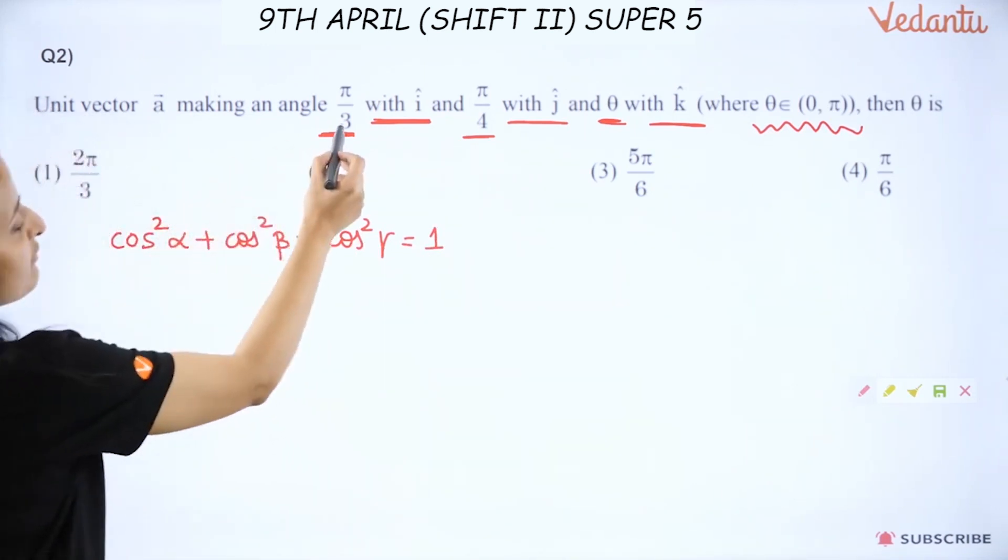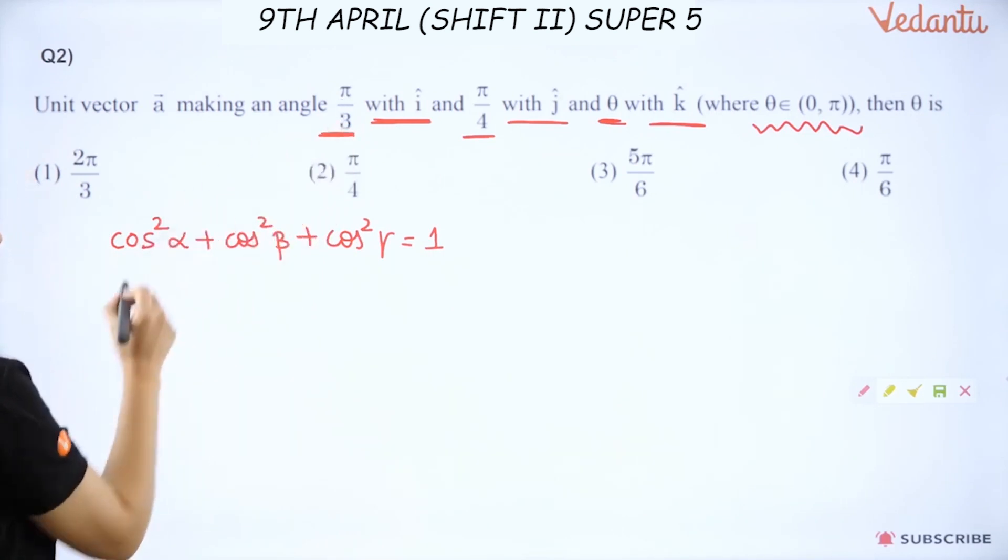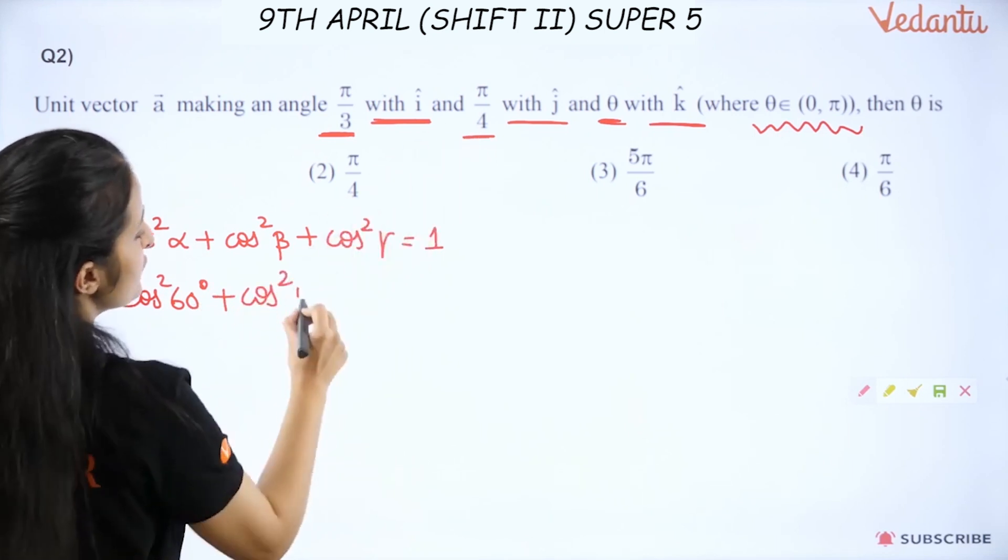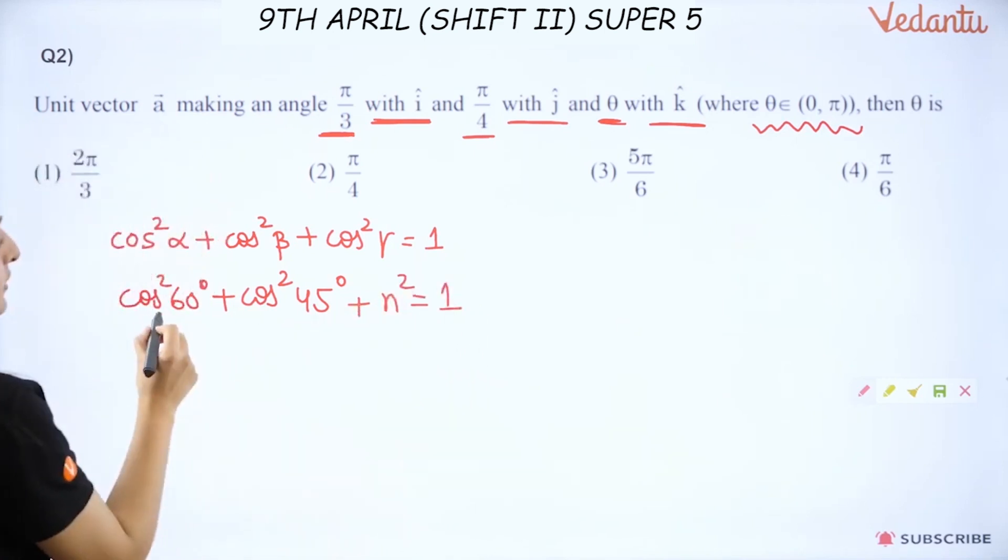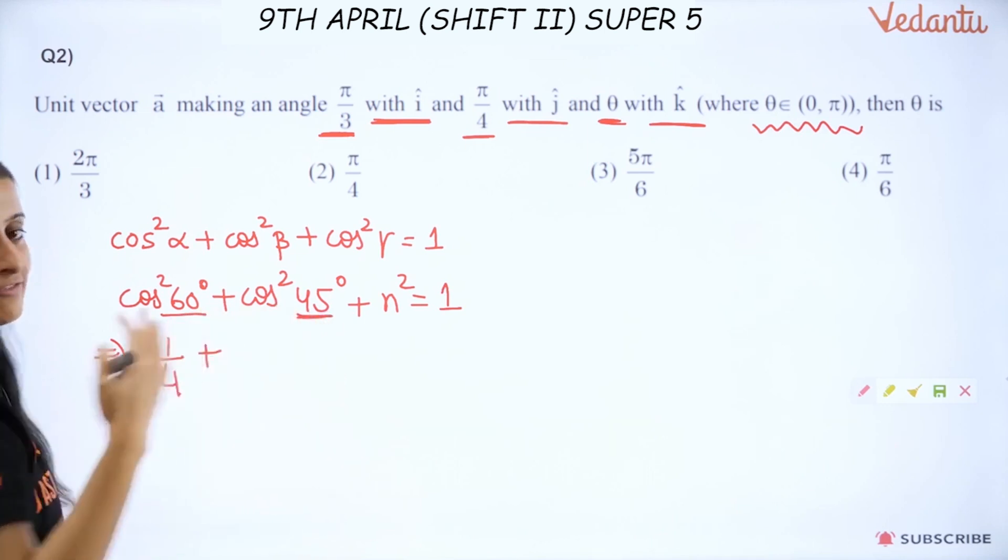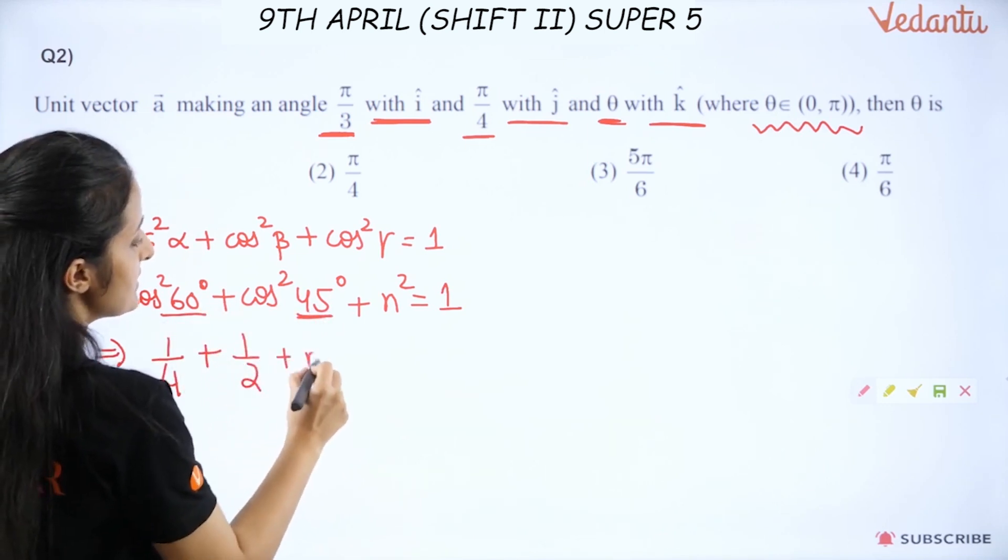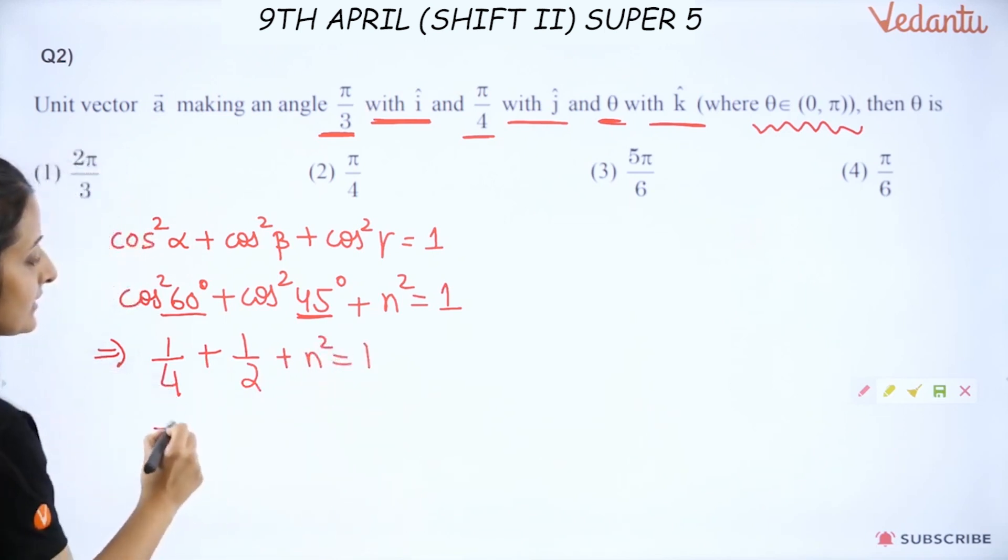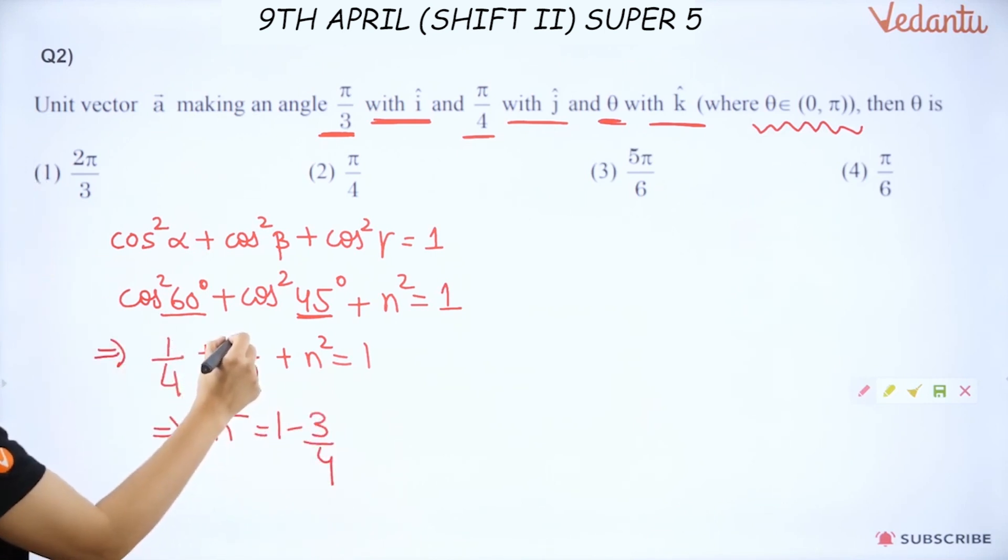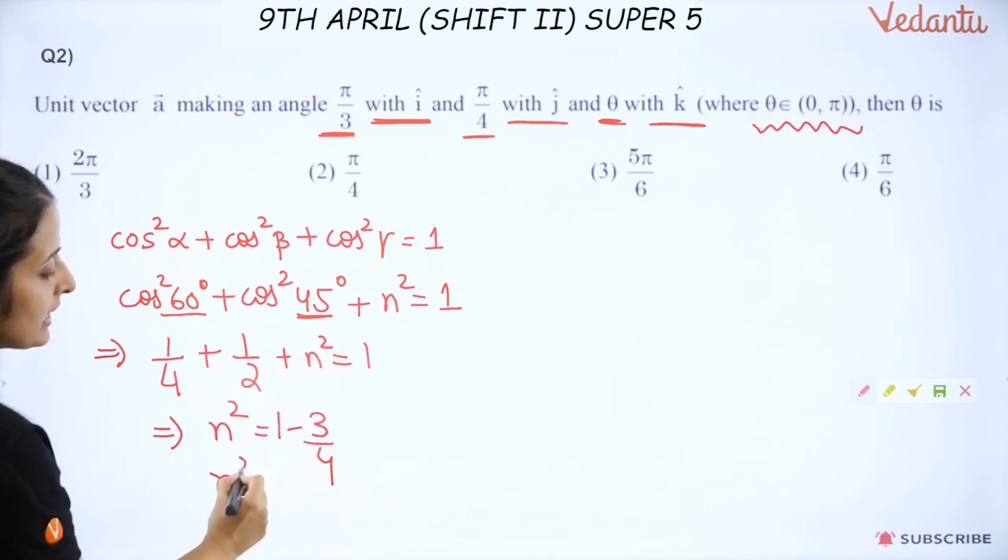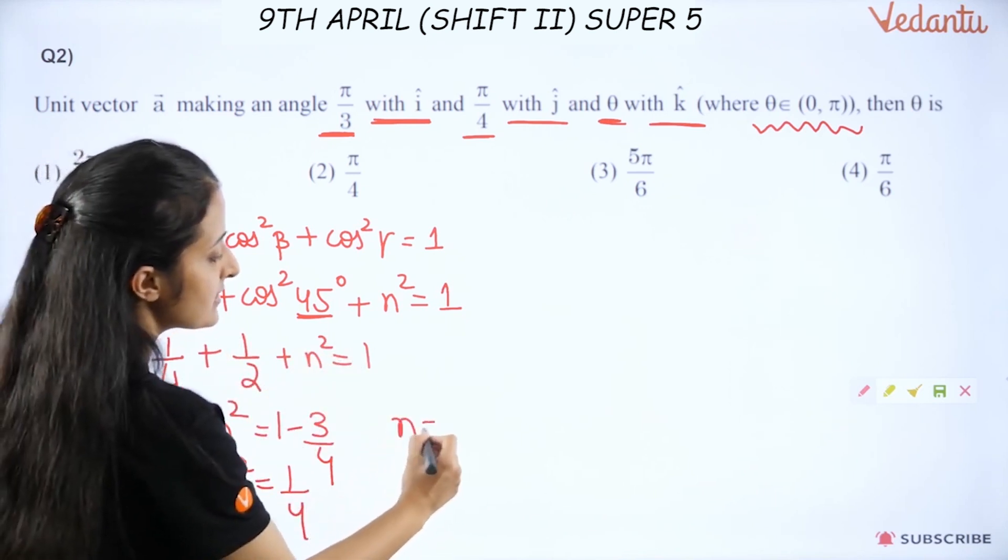So from here you know this formula that cos²α + cos²β + cos²γ = 1. We had discussed this while discussing vectors in 3D. Go check the playlist. So this will be alpha is π/3, so cos²(π/3), meaning cos²(60°) + cos²(π/4) is 45 degrees. And if I call this N, N² = 1. Cos²(60) is already half, so this becomes 1/4. Cos²(45) is 1/√2, so this becomes 1/2.